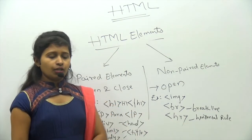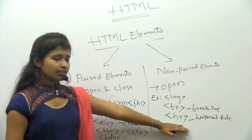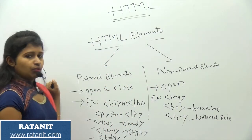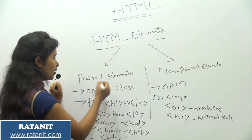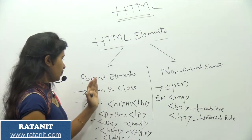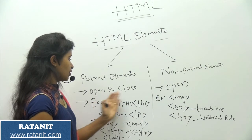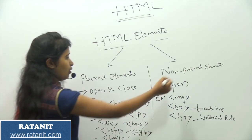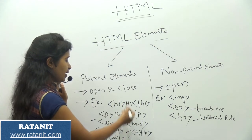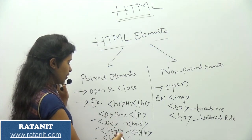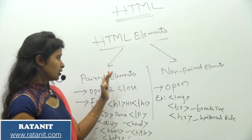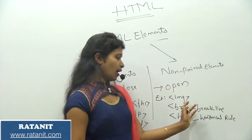Now we are going to see how br and hr work in a practical example. Paired elements compulsorily have an open and close tag. Non-paired elements have only an open tag. Heading, paragraph, html, body, title, and head all come under paired elements, while img, br, and hr are non-paired elements.